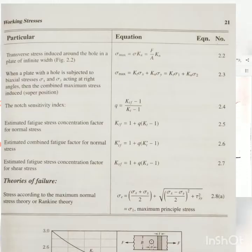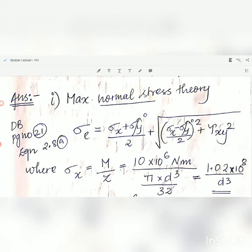Take page number 21. In the data book we can see equation 2.88, that is maximum normal stress theory: sigma e equals sigma x plus sigma y by 2 plus root of sigma x minus sigma y by 2 square plus tau xy square. You can take that page and see that equation.